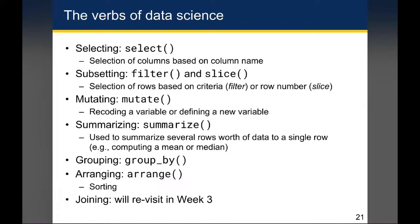We'll be covering several verbs of data science, starting with select, which involves the selection of columns based on a column name; subsetting, which involves the selection of rows either based on criteria using the filter function, or based on a specific row number using the slice function. We'll talk about mutate, which is a way of recoding a variable or defining a new variable in an existing data set. We'll talk about summarize, which is used to summarize several rows of data down to a single row — for example, when you want to calculate a mean or median. We'll talk about grouping, which you can use alongside mutate or summarize to do some pretty powerful things. And then we'll talk about arrange, which is how you sort data based on specific columns.